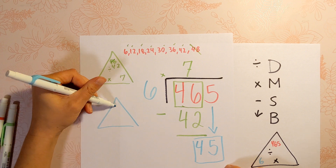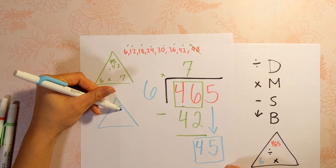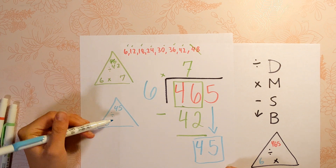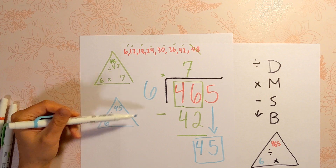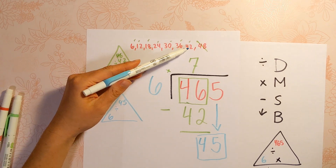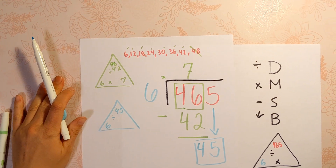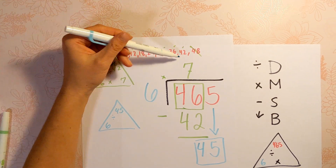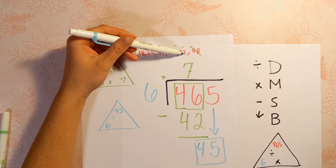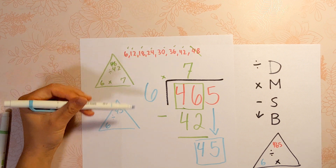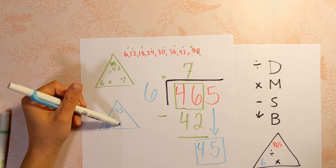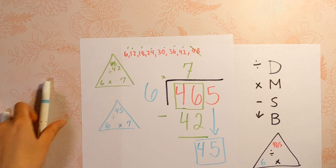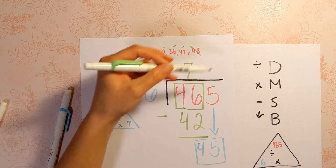45 divided by 6. Can you skip count your 6's and get close to 45 without going over? Yes, you can. 6 times 7 is 42 — that's the closest you can get to 45. So we put another 7 up on top.